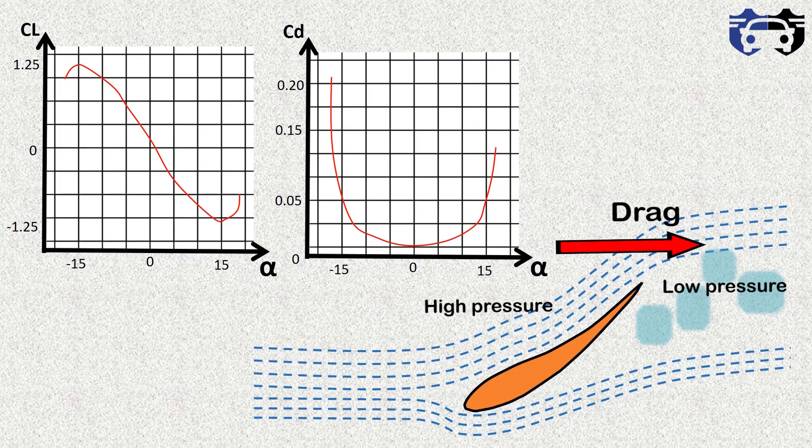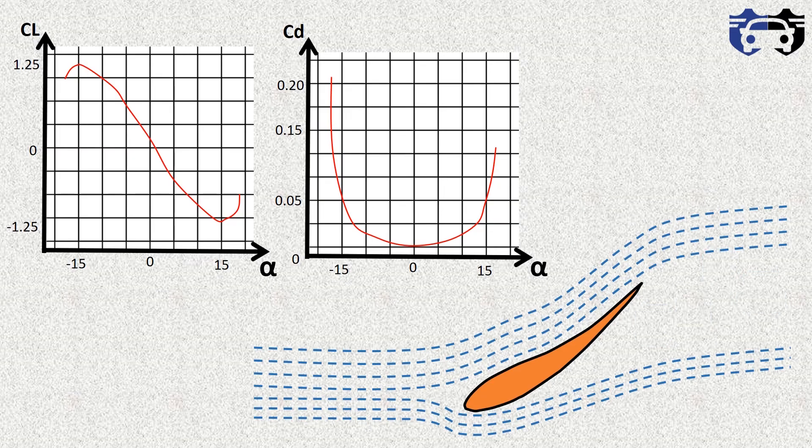That's why choosing an optimum angle of attack according to the curve of aerofoil at particular aspect ratio will give you the good downforce with less drag. So this is all about the rear wings or spoiler and angle of attack.